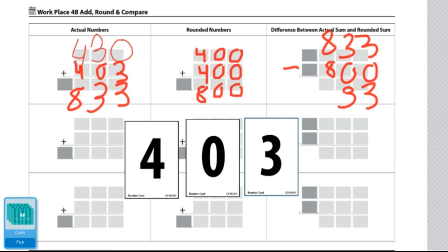Or for more of a challenge, they can play with four-digit numbers by drawing four cards and rounding to the nearest 1,000.